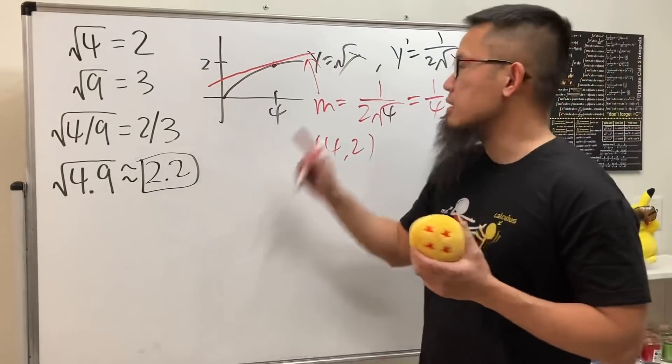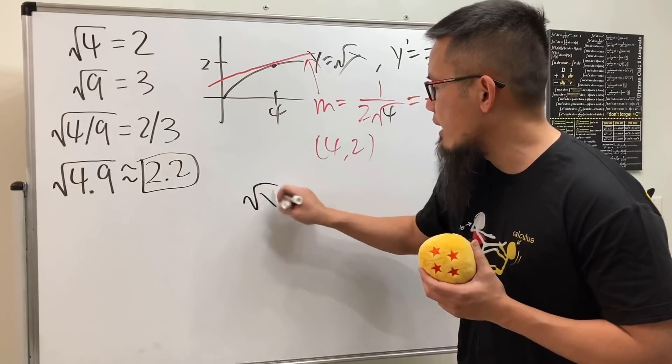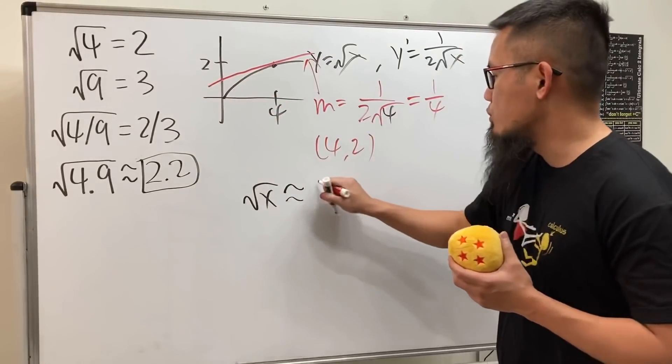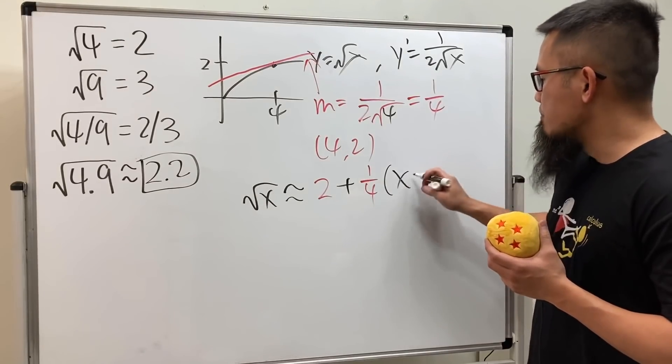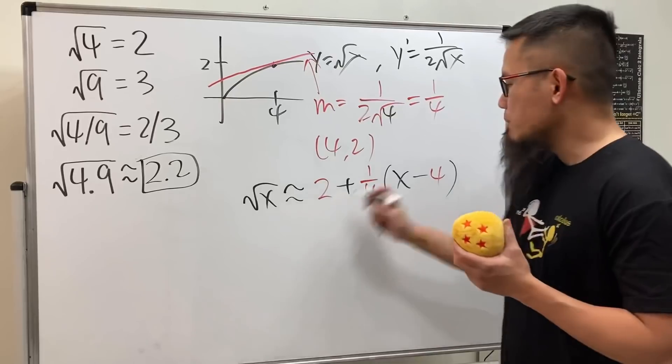Now when x is around 4, we can say the function √x is going to be approximately the y value, which is 2, plus the slope, which is 1/4, times (x - 4). So simplify this.